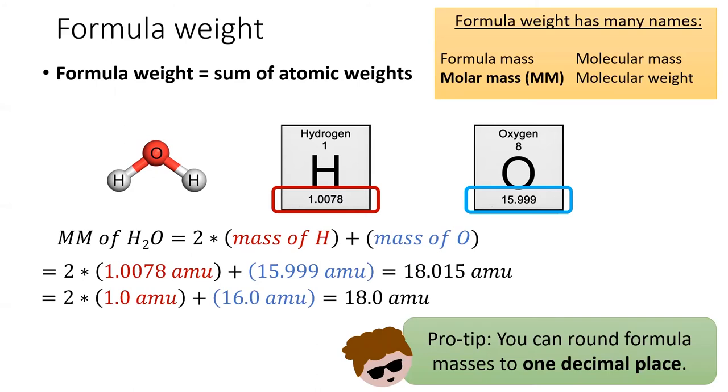The formula mass of water is 18.015 amu. Now, I give you permission to round your molar masses to one decimal place, since this would make future calculations quite a bit easier, and the precision you gain from having all these decimal places doesn't actually get you too far.